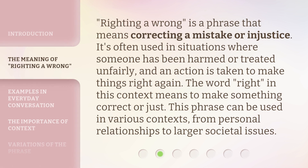'Righting a wrong' is a phrase that means correcting a mistake or injustice. It's often used in situations where someone has been harmed or treated unfairly, and an action is taken to make things right again. The word 'right' in this context means to make something correct or just. This phrase can be used in various contexts, from personal relationships to larger societal issues.